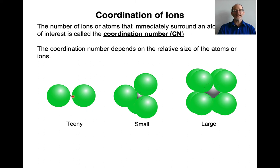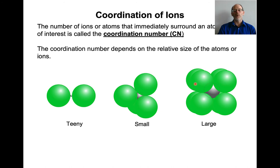If you have a very tiny atom, like carbon plus four, with a couple of big oxygen ions around it, you form a linear molecule. If the central ion is a little larger, you can pack four large ions around it — that's four-fold or tetrahedral coordination. As the central ion gets bigger, you can pack more and more of the larger ions around it.